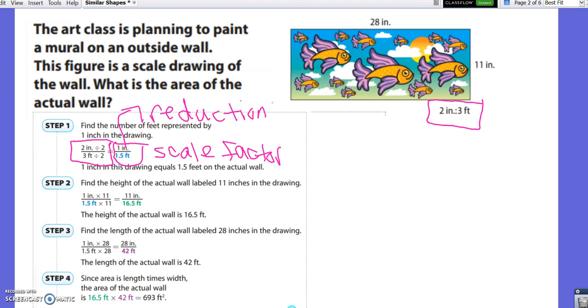Find the height of the actual wall labeled 11 inches. We want to find the area of the wall, so we're going to have to do the height and the length.